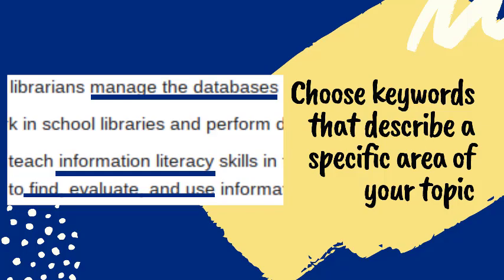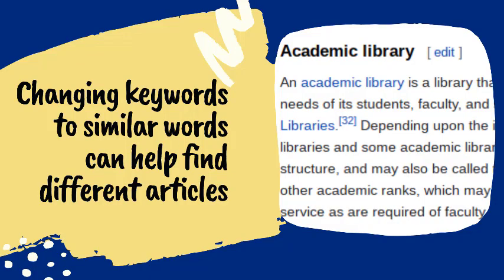Here you can see some examples of keywords I could use to find articles on specific things librarians do in their job. If we scroll down, we will find a section titled 'Academic Library,' so we already have one good keyword — librarian — to use in our database search. The first keyword or term that stands out is 'academic library.' I will write that one down on a list so I can remember it later.